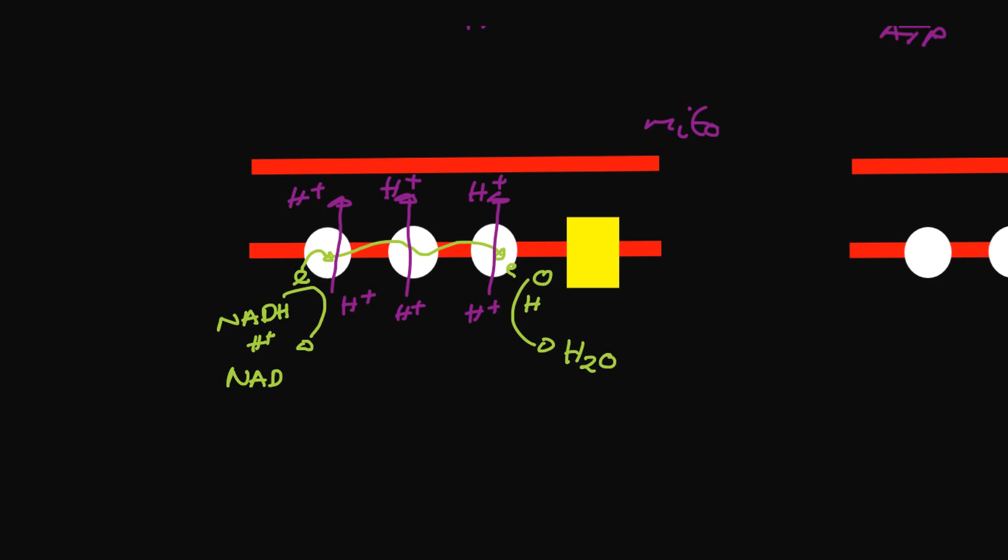This process is called oxidative phosphorylation. You've generated the hydrogen gradient and those hydrogens then flow out through ATP synthase back into the mitochondrial matrix. As it does that, it phosphorylates ADP plus P to give you ATP.